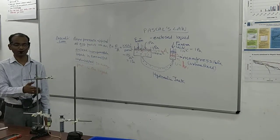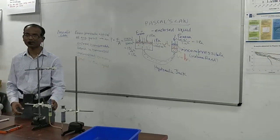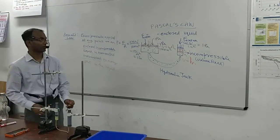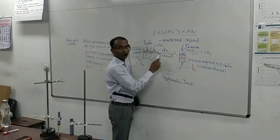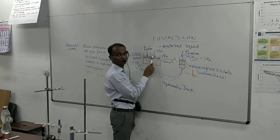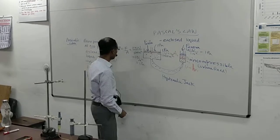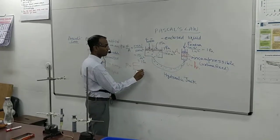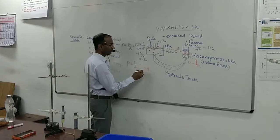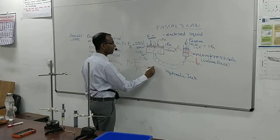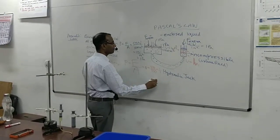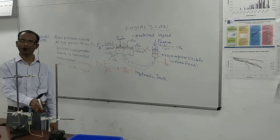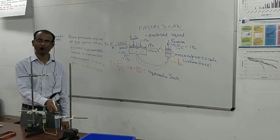A student says the pressure was the same everywhere. The teacher clarifies: pressure is the same, but force is different. Force per area is pressure. The same pressure can be achieved by a big force on a big area or a small force on a small area — 100 divided by 100 equals 1, or 1 divided by 1 equals 1. If you want to apply less force to lift a bigger weight, apply that force on a smaller area and place the weight on a bigger area.